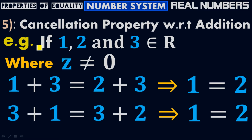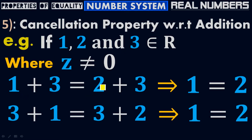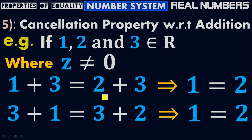I plugged in random values for x, y, and z. For x I put 1, for y I put 2, for z I put 3. All three numbers — 1, 2, 3 — belong to real numbers, and z equals 3, which is not equal to 0. So if z is not equal to 0, then x plus z equals y plus z: 1 plus 3 equals 2 plus 3. We have 3 on the left side and 3 on the right side. When we bring this 3 to the left side, it becomes negative 3. Positive 3 and negative 3 become 0, and we are left only with 1 on the left and 2 on the right. Therefore, 1 equals to 2.